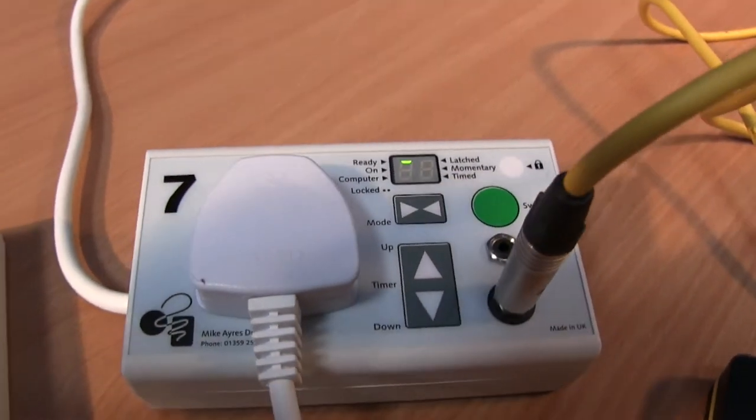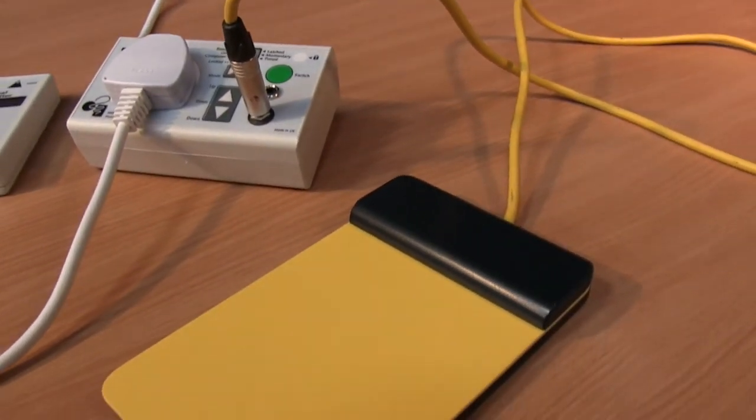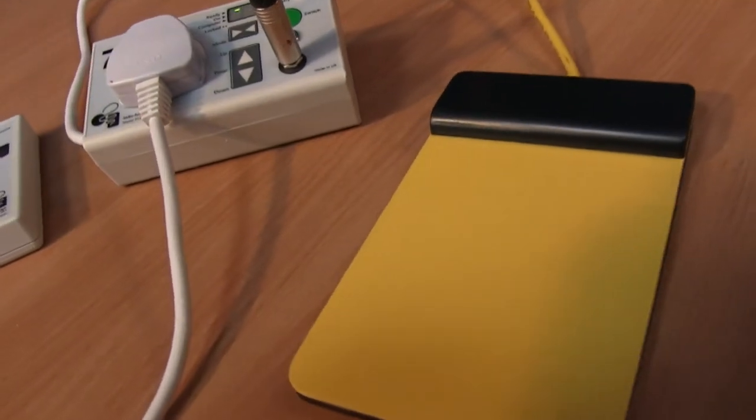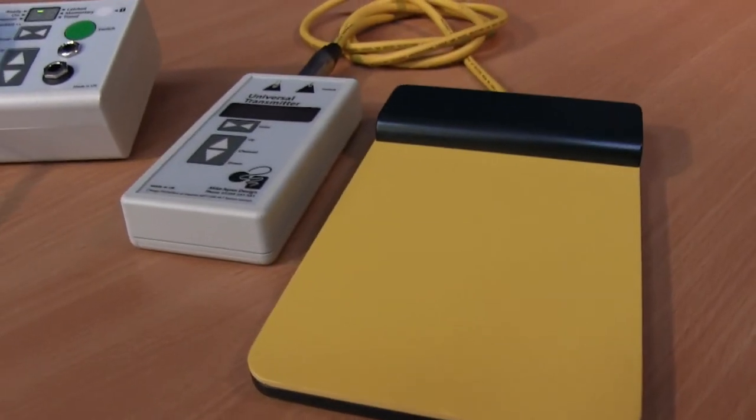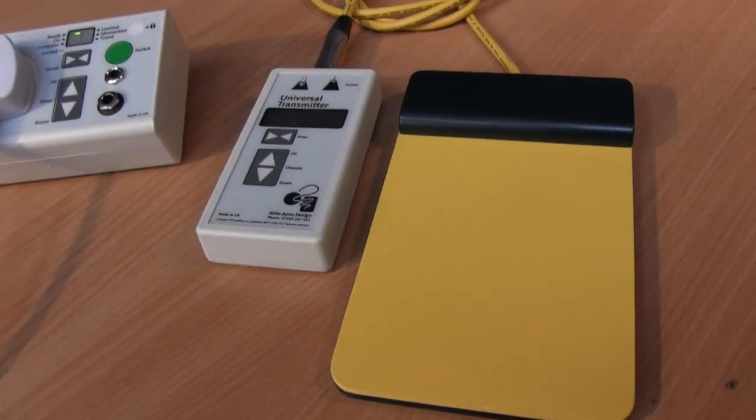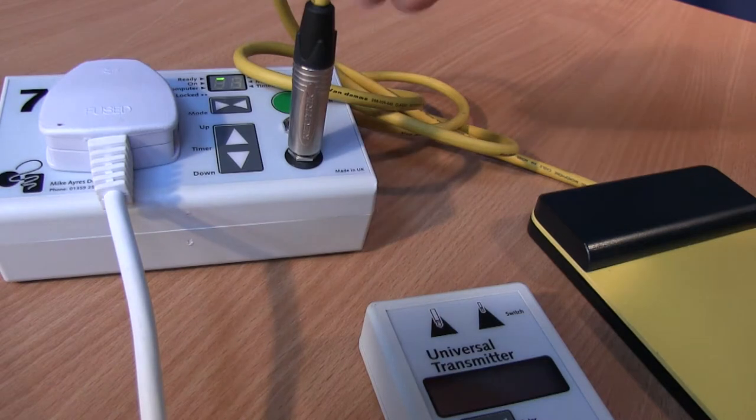So now that we've learned how to use the modes of operation, let's have a look at how we make the switch remote control. In other words, we don't have to plug the switch into the front of the unit, we can plug it into what we call a universal transmitter.